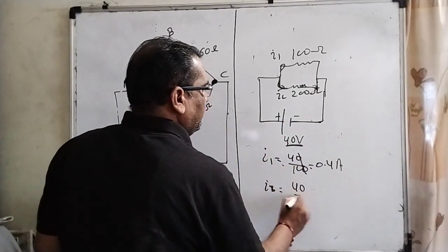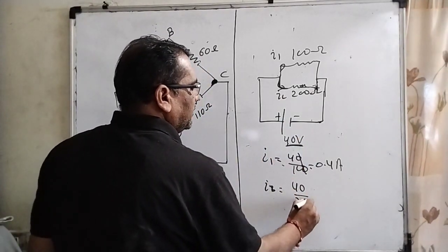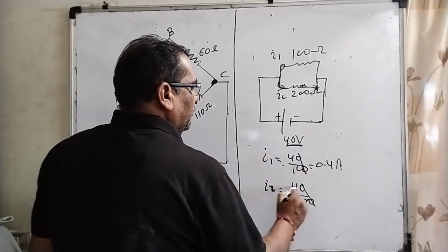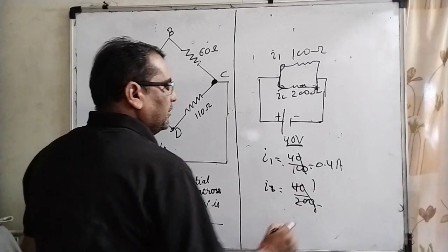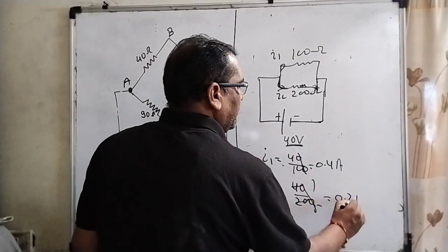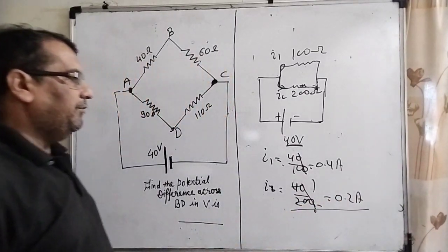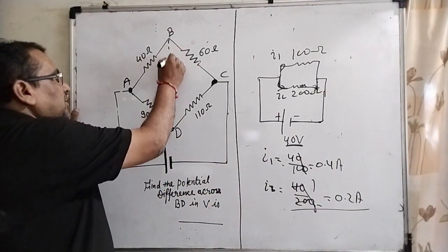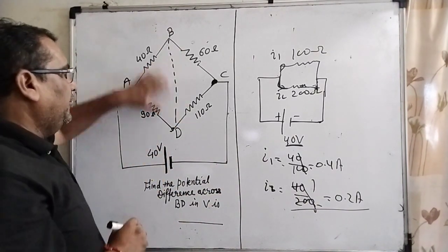Then the potential remains the same and total amount of resistance is 200. Four ones are four, four fives are twenty, then 0.2 amperes. Here we have I1 and I2. Now we have to find out the potential difference VB to VD.